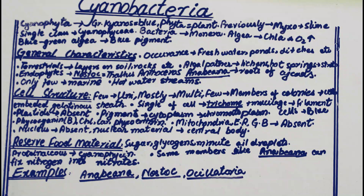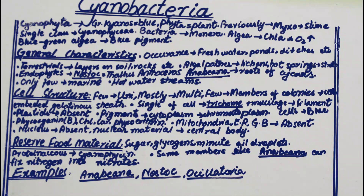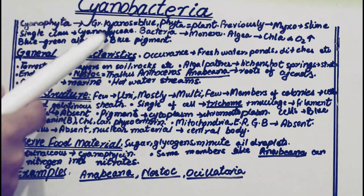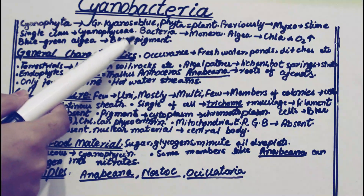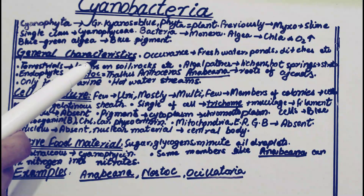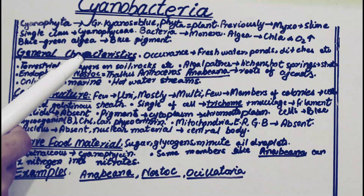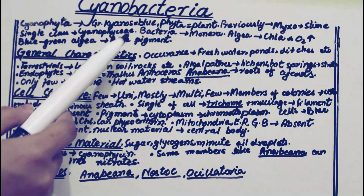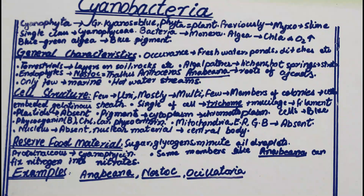Cyanobacteria are both bacteria and algae — they have a mixture of characteristics of both. The blue pigment present in cyanobacteria is the most unique pigment, and that is why they are known as blue-green algae.